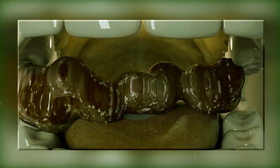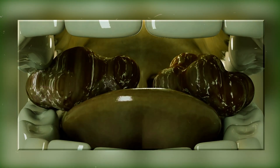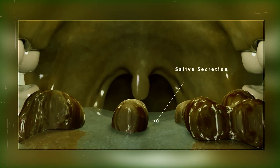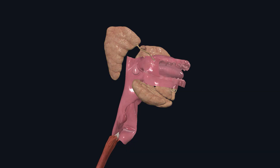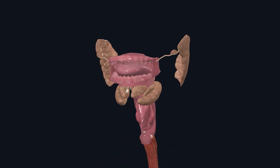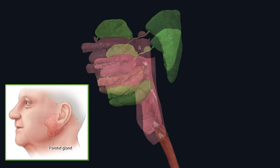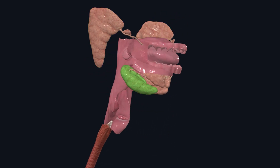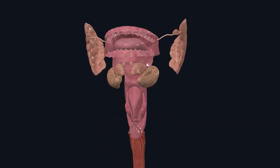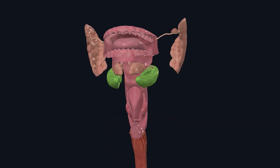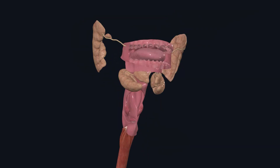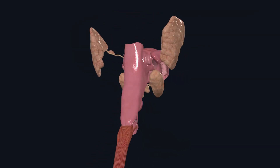During mastication, our tongue continuously pushes the food under the teeth to help with chewing. At the same time, our salivary glands secrete saliva into the mouth to soften the food. There are three pairs of salivary glands: parotid glands, located inside the cheeks just in front of the ears; submandibular glands, found below the jawbone on both sides; and sublingual glands, present under the tongue. All these glands release saliva into the mouth through ducts.